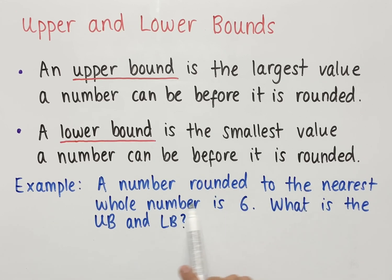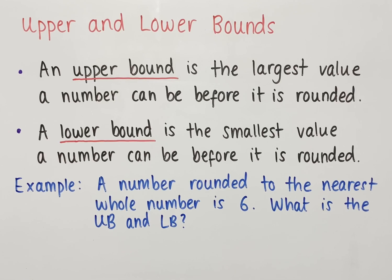For example, a number rounded to the nearest whole number is 6. What is the upper bound and lower bound? When we're rounding a number to the nearest whole number, we look at the first decimal place: if it's 5 or more, we round up; if it's less than 5, we round down. We need to find the smallest and biggest possible values that, when rounded, equal 6.